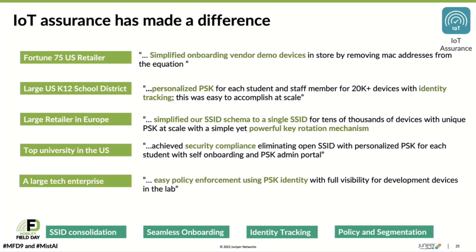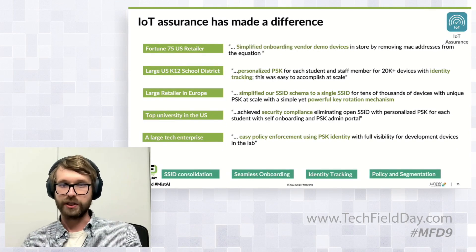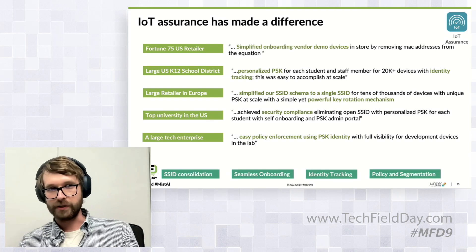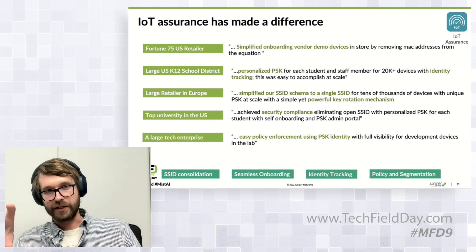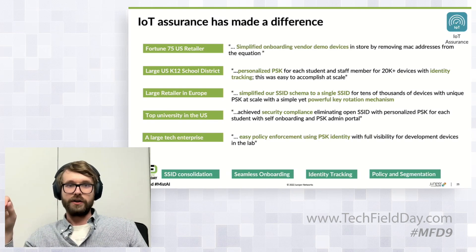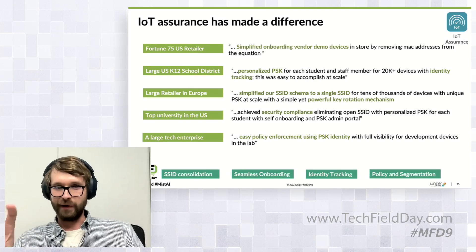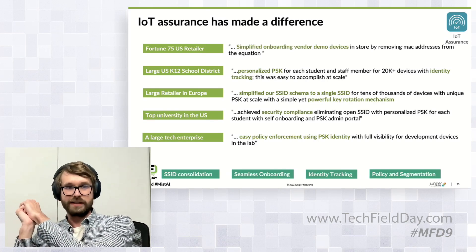A very large K-12 school district in the U.S. leveraged our IoT Assurance service to provision a personalized PSK for each and every student and staff member. We're talking about 20,000-plus devices associated with identity data — very easy to accomplish at scale. This helped them because with identity tracking, they were able to identify network abuse by students since they had a mapping of a specific device to a specific user via that personalized key.